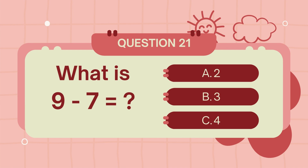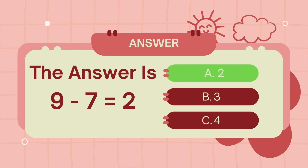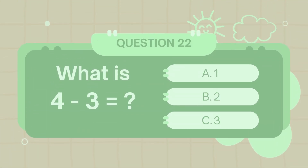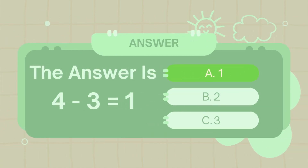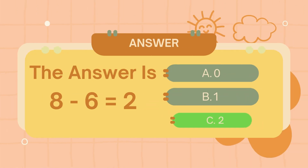What is 9 minus 7? What is 4 minus 3? What is 8 minus 6? The answer is 6. What is 8 minus 6? What is 8 minus 6? The answer is 6.